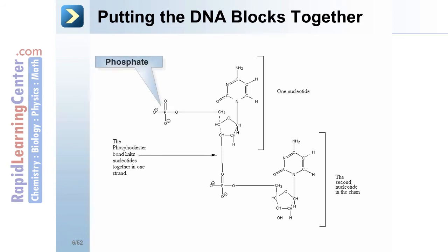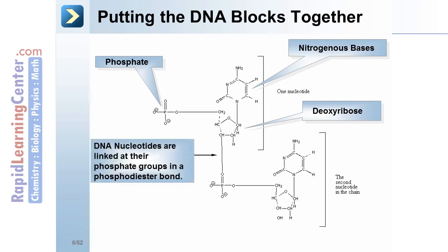This is the phosphate group. This is the nitrogenous base. And the deoxyribose. DNA nucleotides are linked at their phosphate groups in a phosphodiester bond. Notice the phosphate bonds are formed at the 5' and 3' positions.